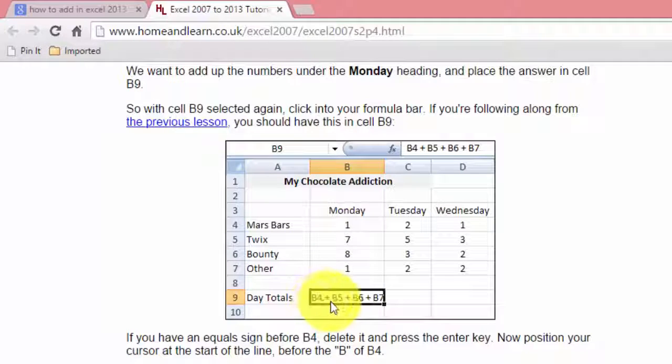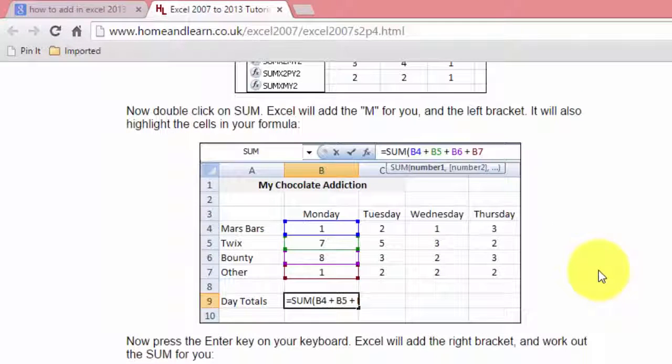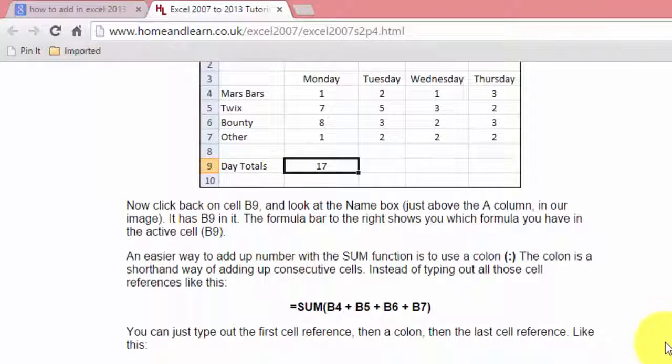Like this one, it says B4 plus B5 plus B6 plus B7. This is actually the rows and columns, the location of the cell. In this example, B4, B5, B6, and B7. You can learn by visiting one of these websites that is available for free.